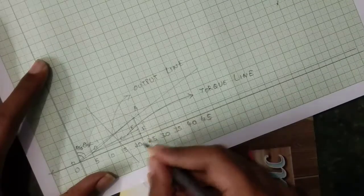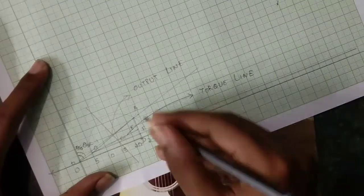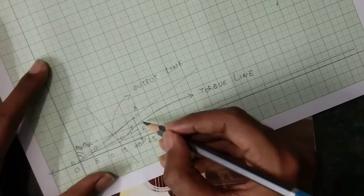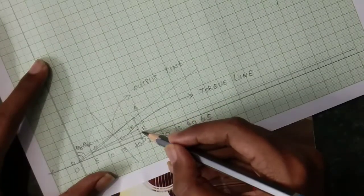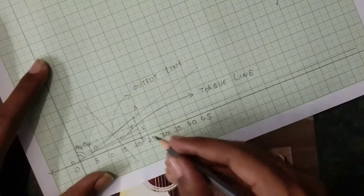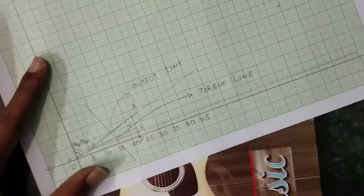Now, F and D. A and E line is called rotor copper loss, and E and F is called stator copper loss. F and D is called fixed loss.